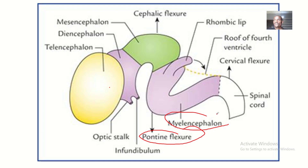The rhomboencephalon divides into the metencephalon and the myelencephalon. I have a video on development of the brain vesicles — if you want to check it out, I'll drop you the link. So, we have seen the pontine flexure.